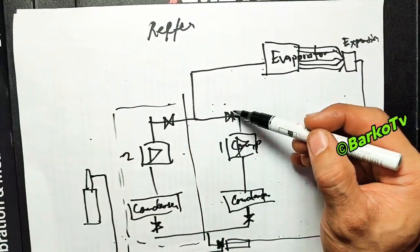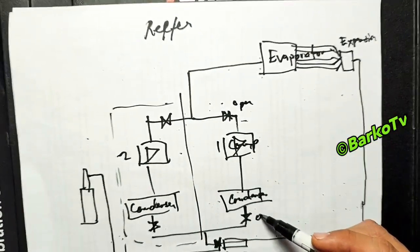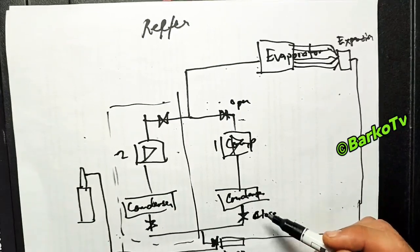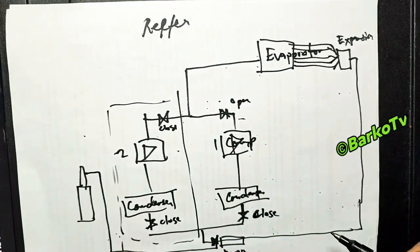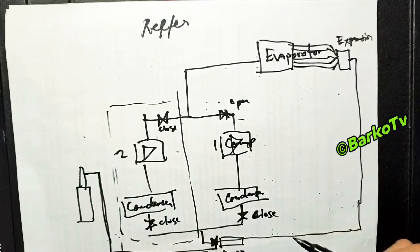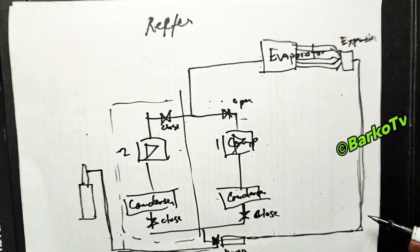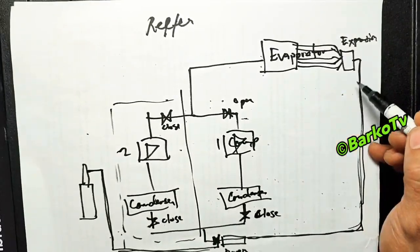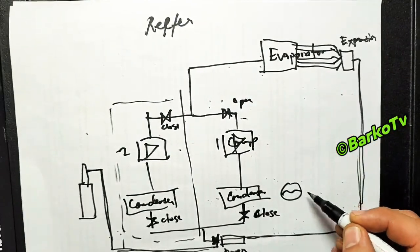Close the isolation valve. The bottle supply goes to the dryer, going to expansion valve, and then to the evaporator.